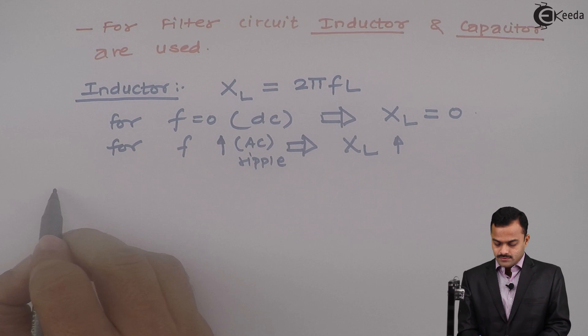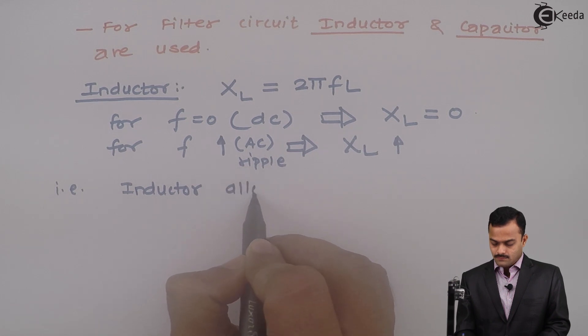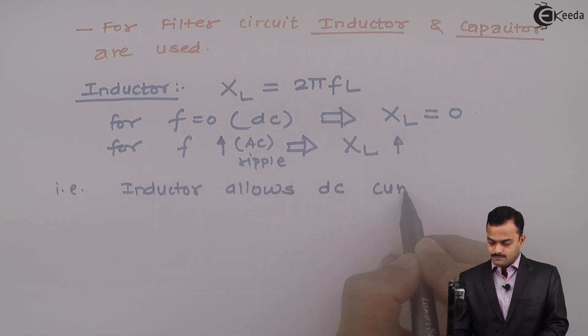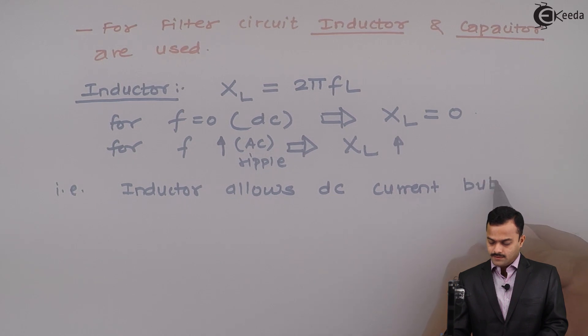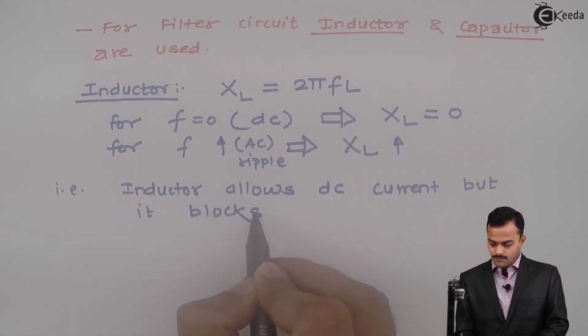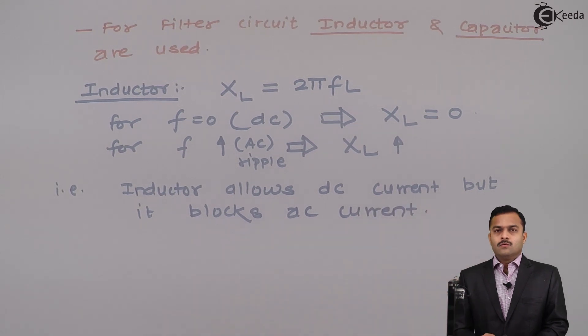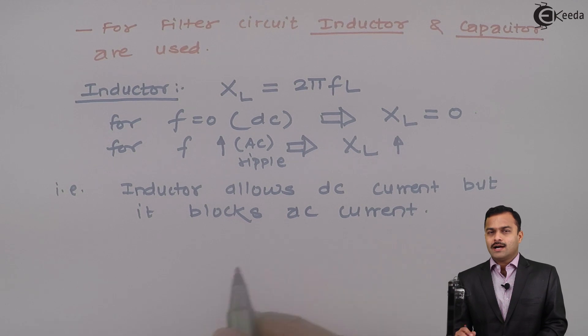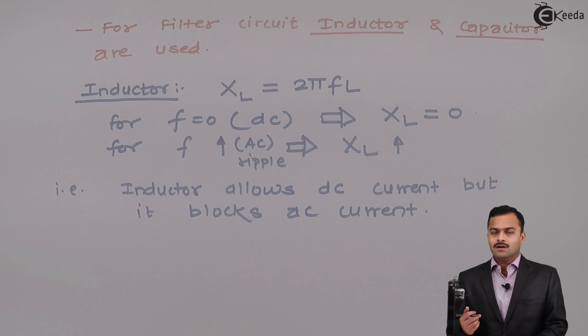The conclusion is this. Inductor allows DC current but it blocks AC current. What is our objective? Maximum DC or ideally 100% DC should pass to the load but AC should be filtered out. If I connect inductor in series with a rectified output voltage, it will block AC component that is ripple and it will allow DC component to pass through the load.